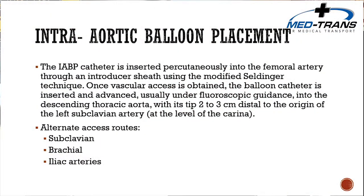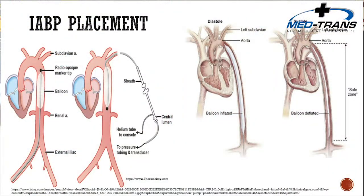The IABP catheter is inserted percutaneously, usually in the femoral artery through an introducer using the modified Seldinger technique, typically performed by an interventional cardiologist. Under fluoroscopy, the balloon catheter is advanced into the descending thoracic aorta, with the tip two to three centimeters distal to the origin of the left subclavian artery, at the level of the carina. Alternate insertion routes include the subclavian, brachial, and iliac arteries.